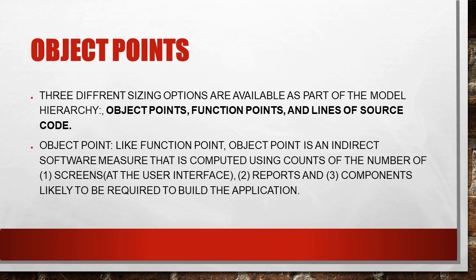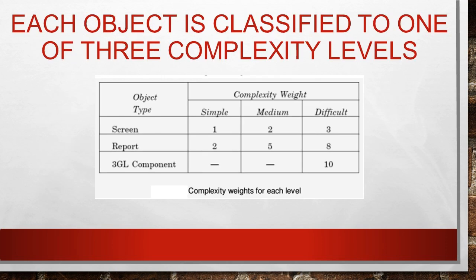Object point is like a function point. Object point is an indirect software measure that is computed using counts of the number of screens at the user interface side, reports, and components likely to be required to build the application.